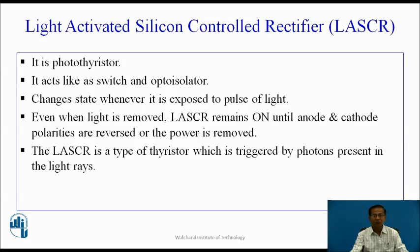LASCR is a photothyristor. It acts as a switch and opto-isolator. Opto-isolator means it provides isolation between the control circuit and power circuit. It changes its state whenever it is exposed to a pulse of light. Even when light is removed, LASCR remains on until anode and cathode polarities are reversed or the power is removed. The LASCR is a type of thyristor which is triggered by photons present in the light rays.